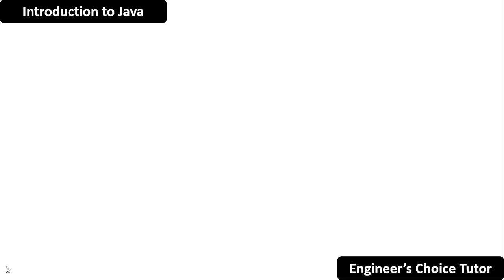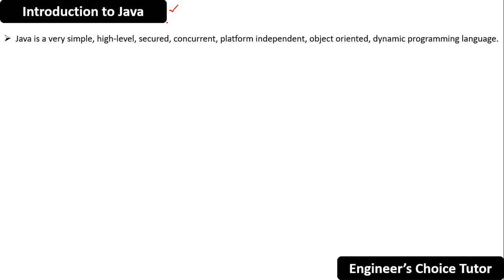In today's lecture we are going to see an introduction to Java. Java is a programming language — a computer language used by programmers to give instructions to a computer to perform a specific task. Java is a very simple, high-level, secured, concurrent, platform-independent, object-oriented programming language. You can also call it a dynamic programming language. We will cover in detail why Java is called simple, high-level, dynamic, or object-oriented in further lectures.